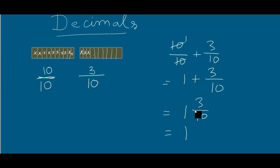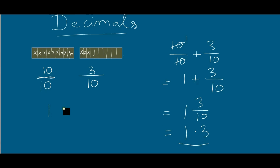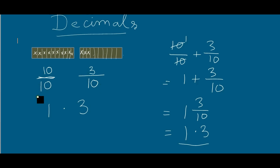Now I write the whole part as it is, and I write three over ten as point three. Instead of writing zero, I write three, and instead of writing one, I write a point. So this becomes one point three. This can also be written as one point three, which means these crossed small boxes equal one point three, or ten over ten plus three over ten.